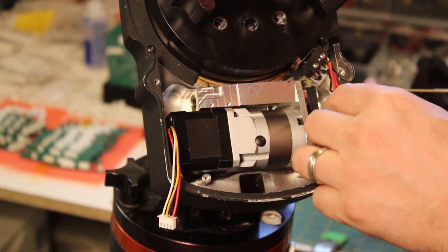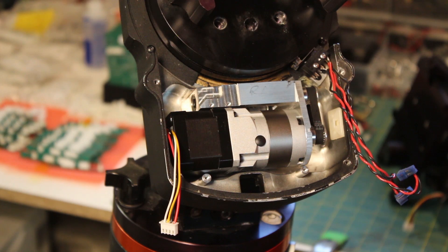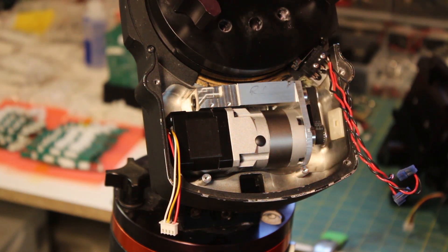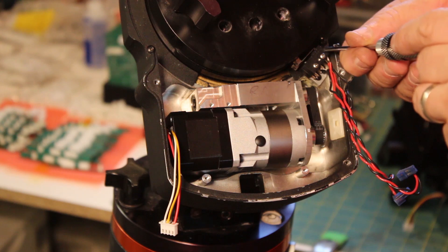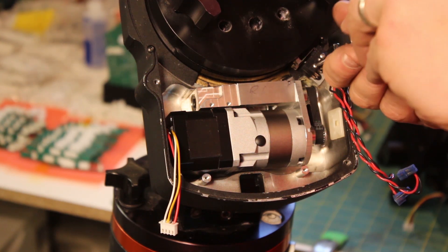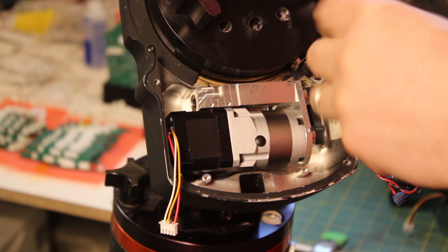So testing these with the ohm meter would probably be a good idea to find out if they're open or closed once you've got this final assembly. It never hurts to double and triple check. Measure twice, cut once.